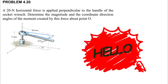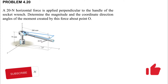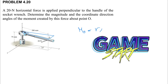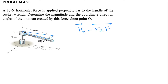Welcome back. In today's question, we have a twin horizontal force applying perpendicular to the handle of a socket wrench. We need to determine the magnitude and coordinate direction angles of the moment created by this force about point O. We have a 20 Newton force applied at a point, and we need to find the moment about point O using the cross product of r and F.